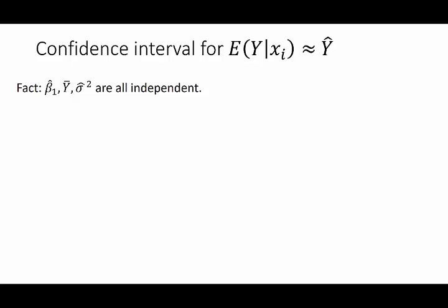Our first task is to develop a formula for the confidence interval of the mean response at a given value of x. We've established that ŷ is a natural estimator for this parameter. If you prefer, you can think of the mean response as a parameter μ(x_i) — for every x you have a different parameter μ — and ŷ is essentially a μ-hat.